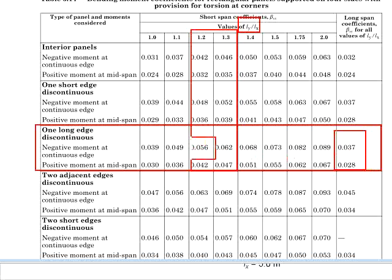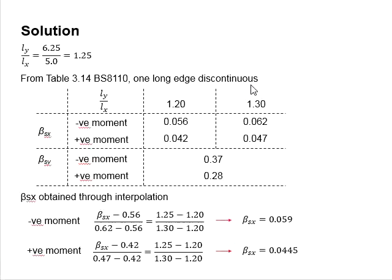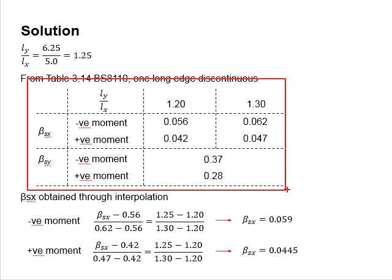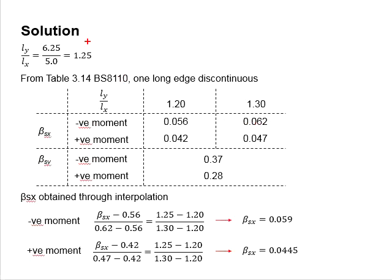Copy this value down and you will get the information here. The Ly per Lx is 1.25, therefore we need to do interpolations based on the value obtained here.